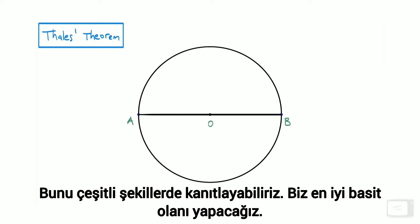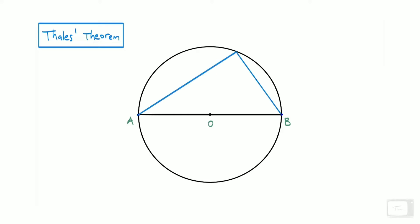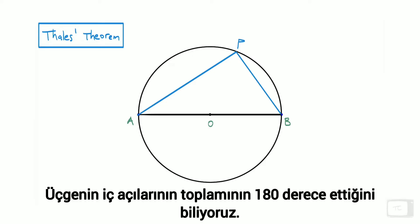We're going to do the most elementary proof. Here we've got triangle APB. This is point P, and we know that angles in a triangle sum to 180 degrees.